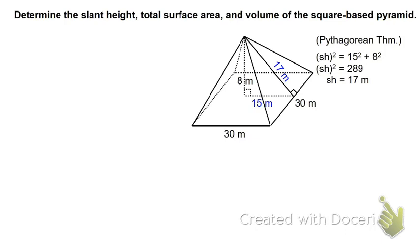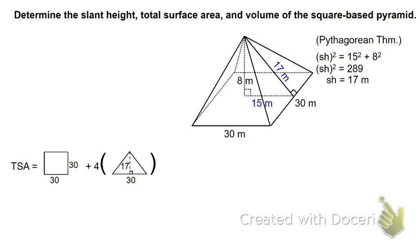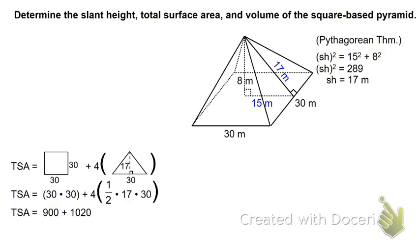We have the slant height, so now we turn our attention to total surface area. For this figure, we have 1 base — the 30 by 30 square — and because the square has 4 equal sides, all of the triangles rising off of it have equal area. So we have the area of the square plus 4 congruent triangles. The area of the square is 30 times 30, plus 4 triangles each with area half of 30 times 17. 30 times 30 is 900; 4 times half is 2; 2 times 17 is 34; 34 times 30 is 1020. Adding together, we get 1920 meters squared for the total surface area.